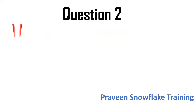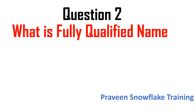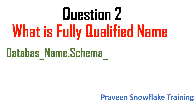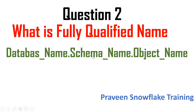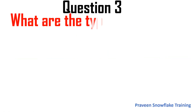The second question is: what is a fully qualified name? A fully qualified name is nothing but the database name, schema name, and object name — it can be a table, a view, or anything. So: database name, schema name, and object name.